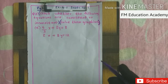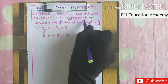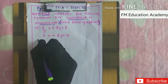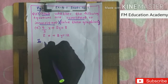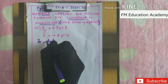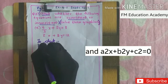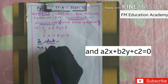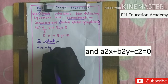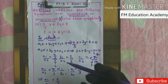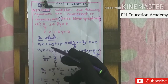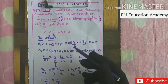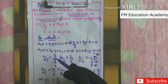To check whether the system is consistent or inconsistent, we first convert the equations to standard form: a₁x + b₁y + c₁ = 0. We then compare the ratios a₁/a₂, b₁/b₂, and c₁/c₂. For the first equation, a₁ is 4/3.